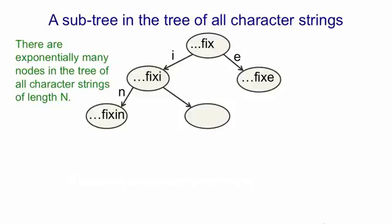There's exponentially many nodes in the tree of all character strings of length N. So this is going to be a very big tree. We couldn't possibly store it all. If we could store it all, what we'd like to do is put a probability on each of those arrows. And that would be the probability of producing that letter given the context of the node.